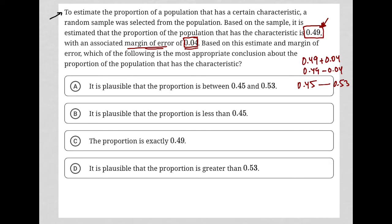So our true value, basically what this question is telling us, is somewhere in that range, but we think it's 0.49. So continuing on, it says, based on this estimate and margin of error, which of the following is the most appropriate conclusion about the proportion of the population that has the characteristic? And again, the conclusion is that it should be between these points.